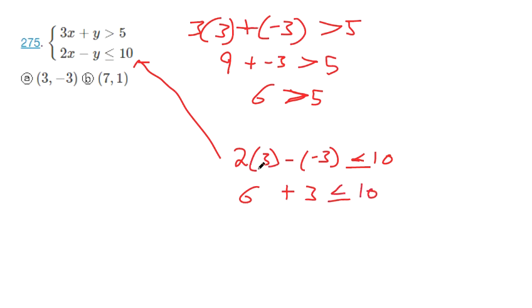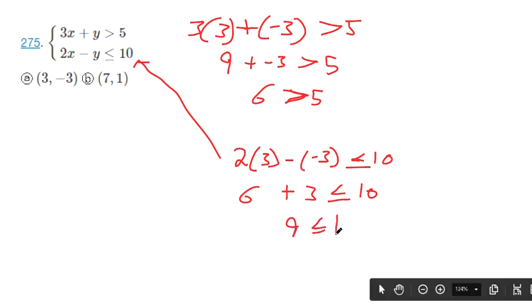2 times 3 makes 6, minus a negative 3 means plus 3, so 6 plus 3 makes 9. That is a true statement, the alligator's eating the right thing. So this is a solution.